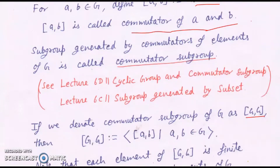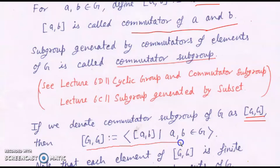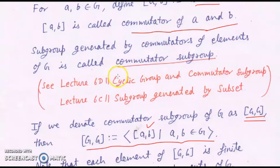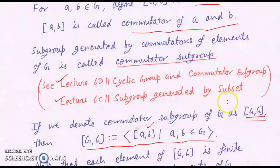Now collect all these commutators and generate a subgroup by them, and that subgroup is called the commutator subgroup, usually denoted as [G,G]. So [G,G] is defined to be the subgroup generated by the set of elements of the form [A,B], where A,B belong to G. This concept of commutator subgroup was also introduced in lecture 60, which you can refer to for details and for the concept of subgroup generated by a subset.